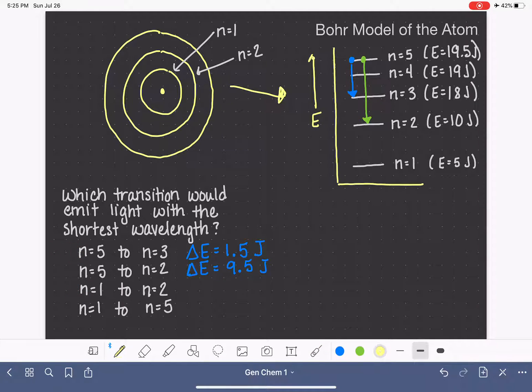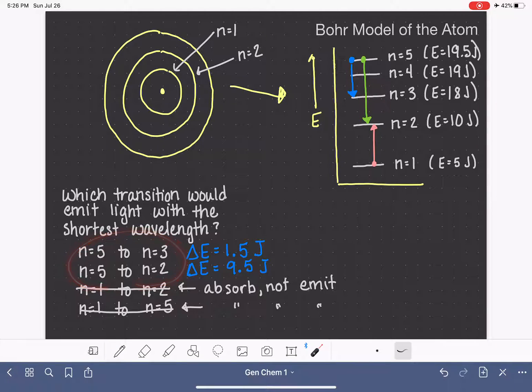So what about our next one? Here we're going from n equals 1 to n equals 2. So that would be starting at n equals 1 and moving up to n equals 2. So our electron now is moving in a different direction. If we're starting at n equals 1, we're starting with 5 joules, and to go to n equals 2, we need 10 joules. That process requires us to absorb 5 joules of energy. So this question is asking about emitting, not absorbing, which means we can definitely rule this out. This is absorbing, not emitting. Whenever we're going from a low energy up to a high energy, the only way that's going to be possible is by absorbing, not emitting energy.